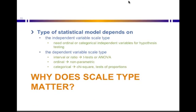Why does scale type matter? Your type of statistical model depends on the scale type of both your independent and dependent variable. If you're running hypothesis tests, your independent variable is likely ordinal or categorical. If you have an interval or ratio independent variable, you're likely looking at other modeling techniques such as regression. For a dependent variable — if it's interval or ratio, you're likely able to run a t-test or ANOVA. If it's only ordinal, a non-parametric test might be needed. If it's categorical, tests like a chi-square or test of proportion could be appropriate. Knowing the scale type drives what statistical model you can create.